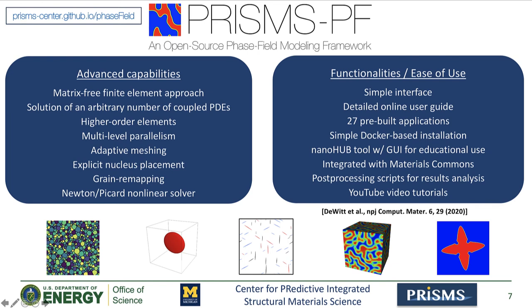The use of adaptive meshing is very useful when we have regions in space, such as interfaces, where a high resolution is required, along with regions where fields vary slowly — typically bulk phases — that don't need to be resolved as much. We also have a method for explicit nucleation placement based on a nucleation probability function that the user can define, a functionality for grain remapping which can significantly reduce computation time in grain growth simulations, and a recently added Newton-Picard solver which allows us to solve nonlinear ordinary differential equations at every time step — for example, solving for the equilibrium electrostatic potential as the system evolves.